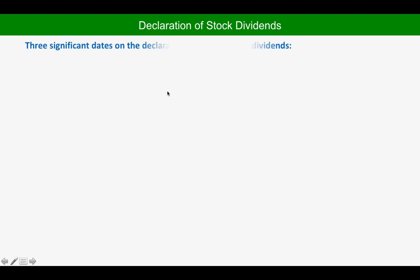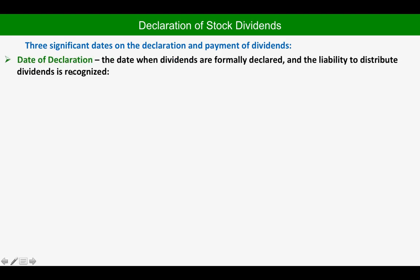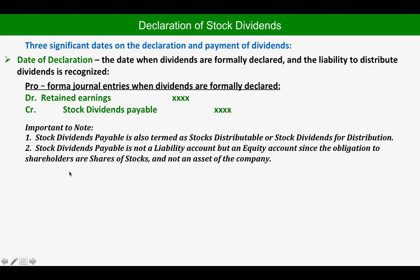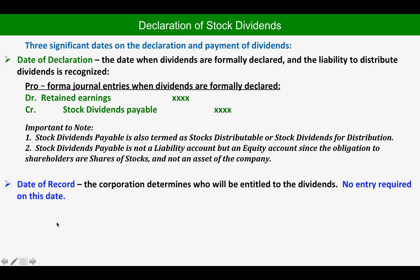Similarly, there are three significant dates for the declaration of stock dividends. On the date of declaration, we recognize the liability: we debit Retained Earnings and credit Stock Dividends Payable. Note that Stock Dividends Payable — also termed 'stocks distributable' or 'stock dividends for distribution' — is not a liability account but an equity account, since the obligation to shareholders is shares of stock and not an asset. It is just a movement within the equity side of the accounting equation.